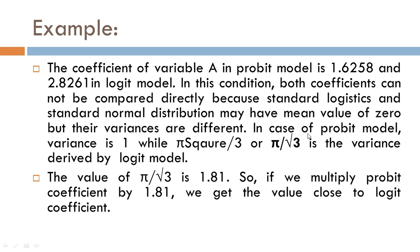In the case of probit model, variance is 1 while pi squared upon 3 or pi upon root 3 is the variance derived by logit model, and we know the value of pi is equivalent to 22 upon 7.